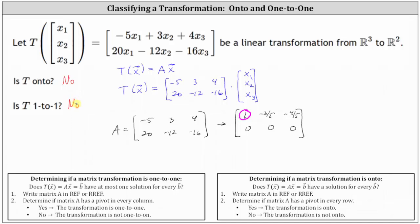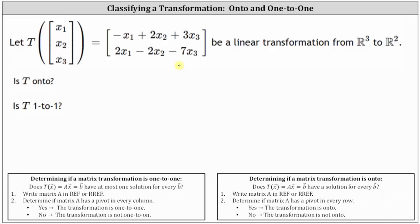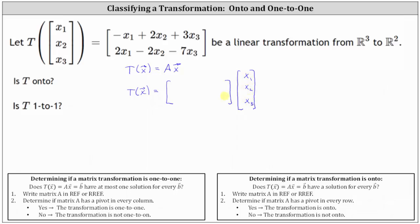Let's take a look at one more example. This is the same problem with different formulas. Again, we're going to write the equation as T(x) = A times vector x. So we have T of vector x equals the coefficient matrix times vector x as a three-by-one column matrix, where the components are x1, x2, x3.